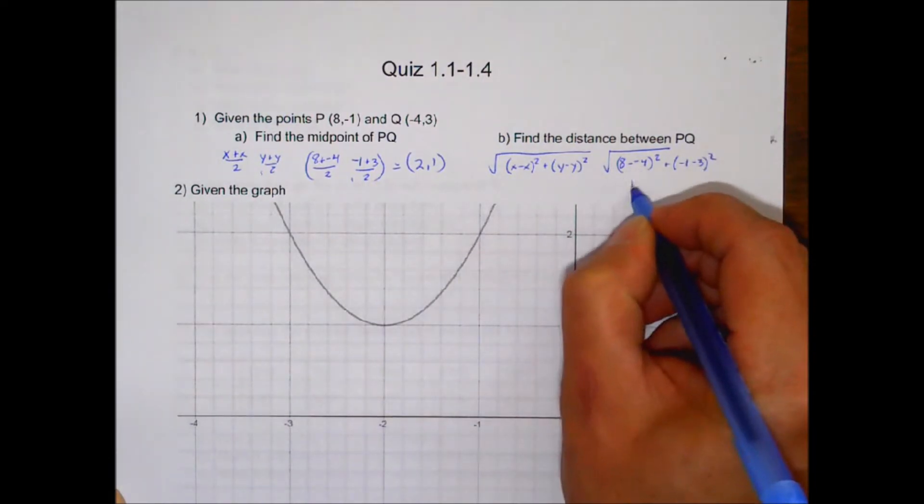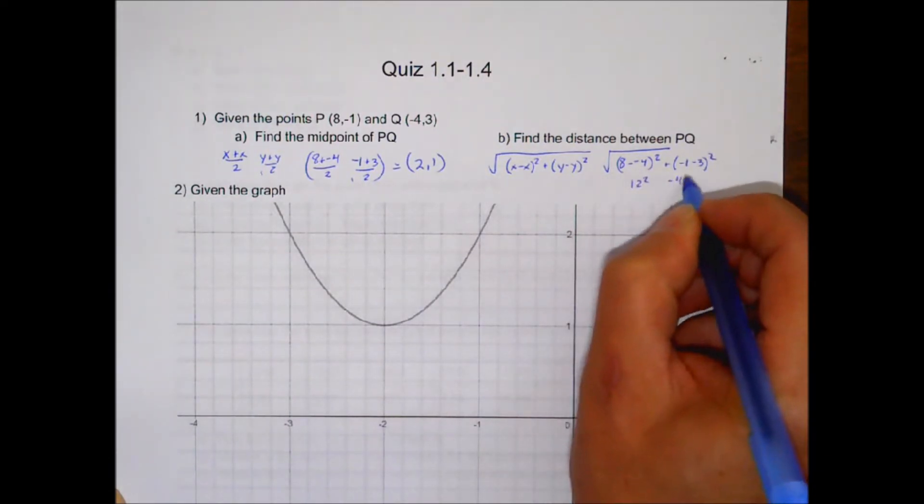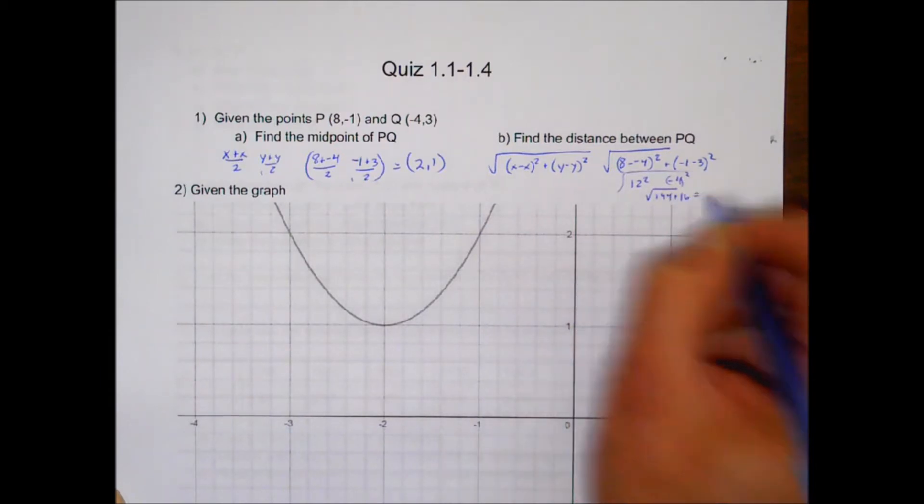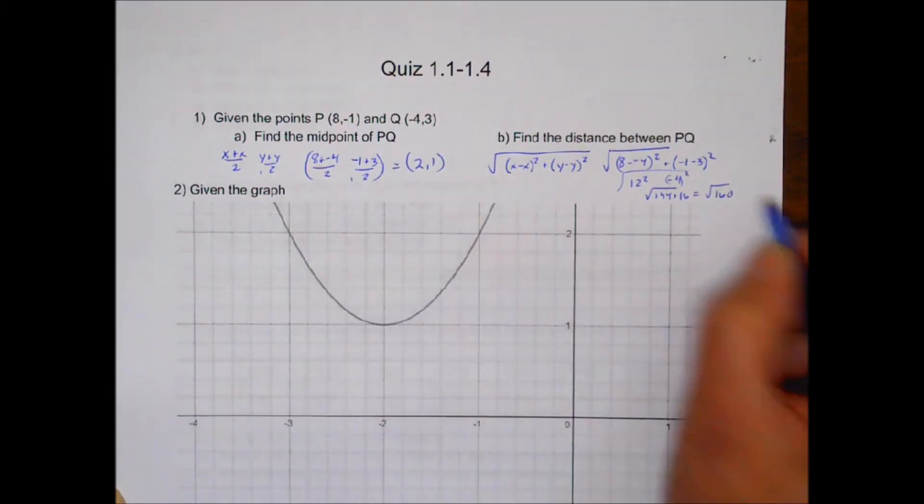Which gives you 12 squared here and negative 4 squared there, and gives you 144 plus 16, which is the square root of 160. That's approximately 12.65.